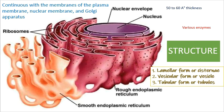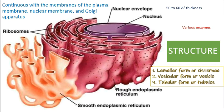The vesicles are oval membrane-bound vacuolar structures having a diameter of 25 to 500 micrometers, which is much larger than the cisternae. They often remain isolated in the cytoplasm and occur in most cells, but are especially abundant in smooth ER.